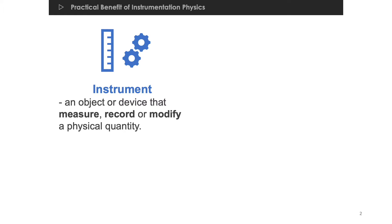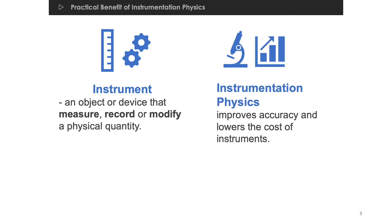And this is where instrumentation physics comes in. Instrumentation physics is an umbrella term that deals with the study and the development of scientific instruments using physics concepts and its applications to other disciplines.